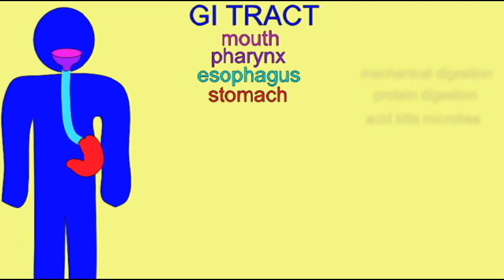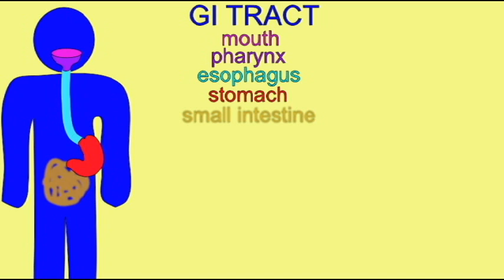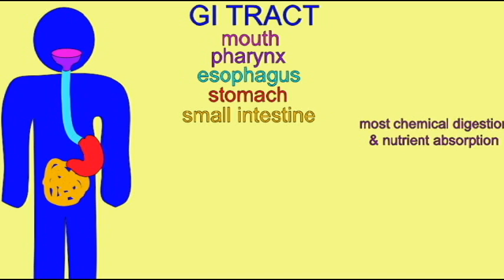This food then passes along the small intestine, which is where most of the chemical digestion occurs. These are the chemical reactions which break the large ingested molecules into the smaller monomers which can then be absorbed into the bloodstream.